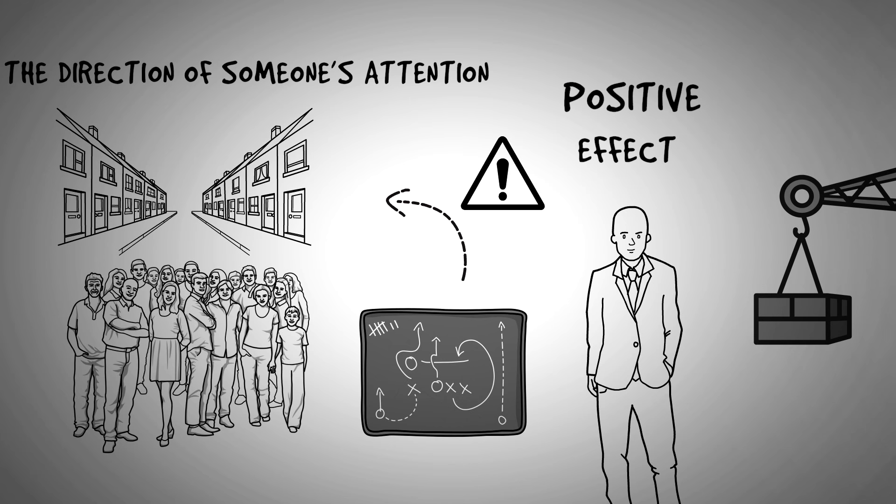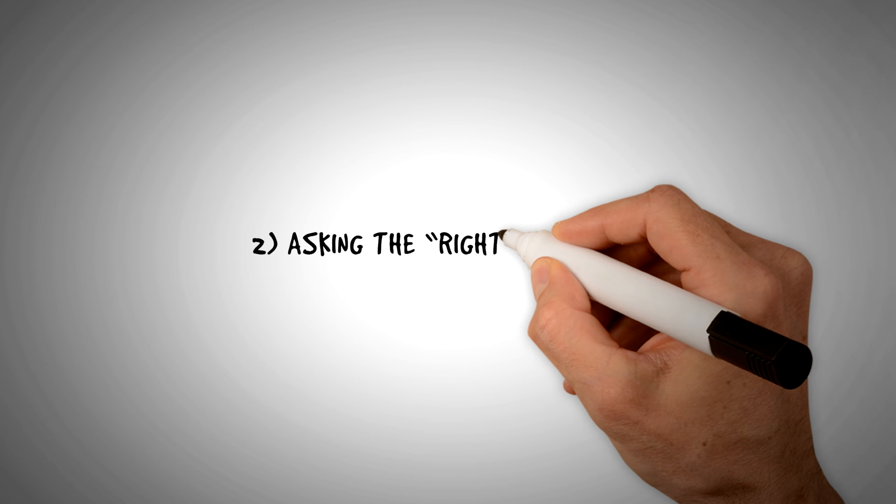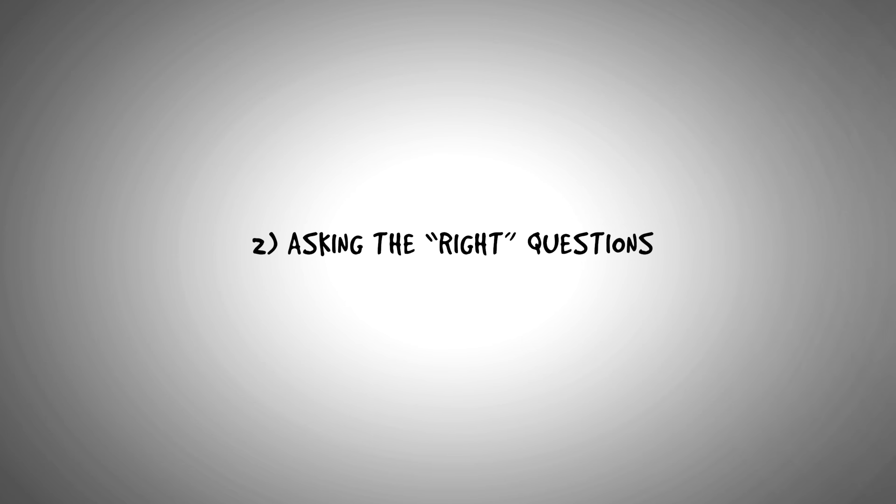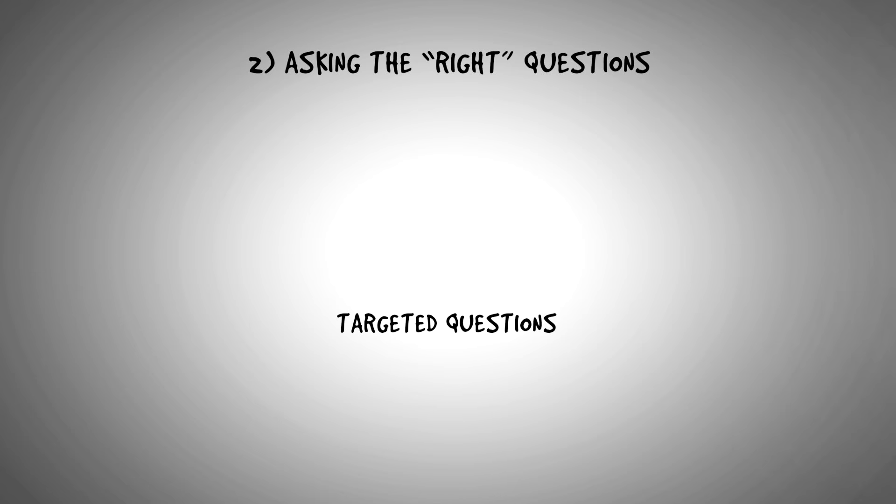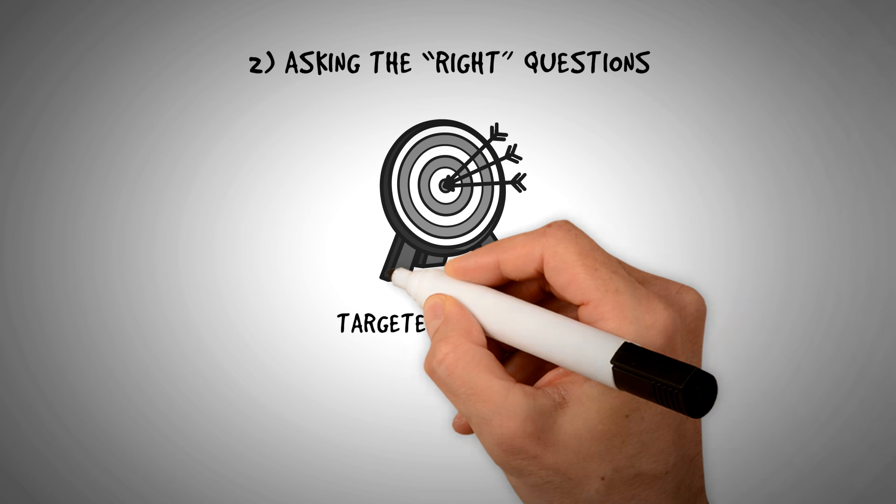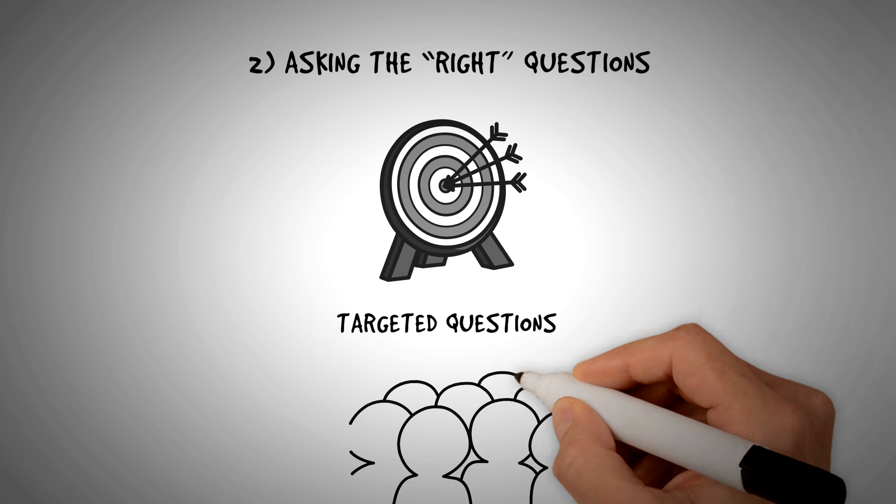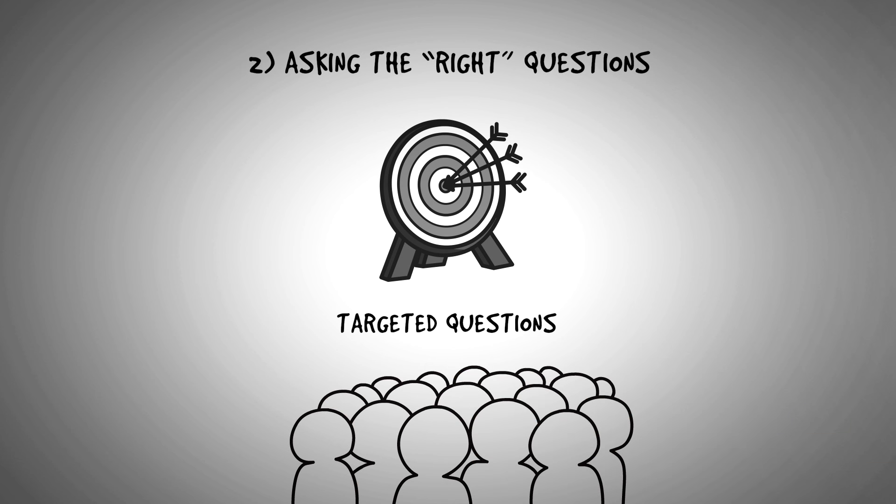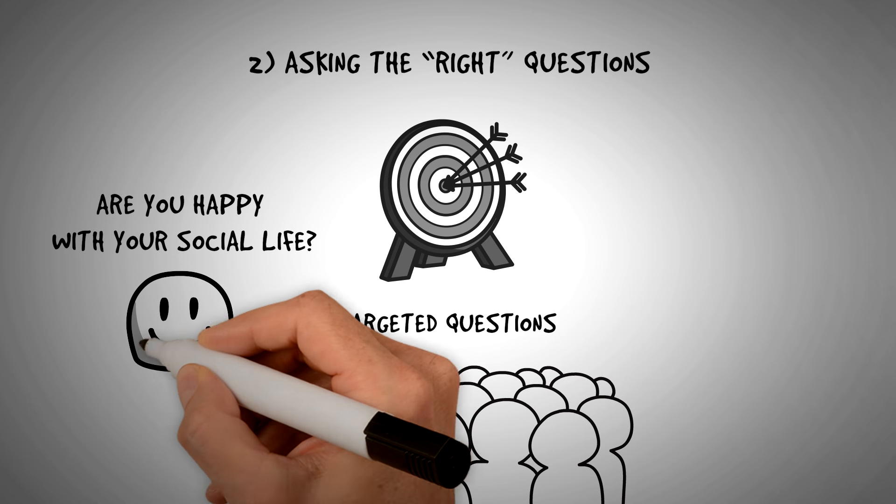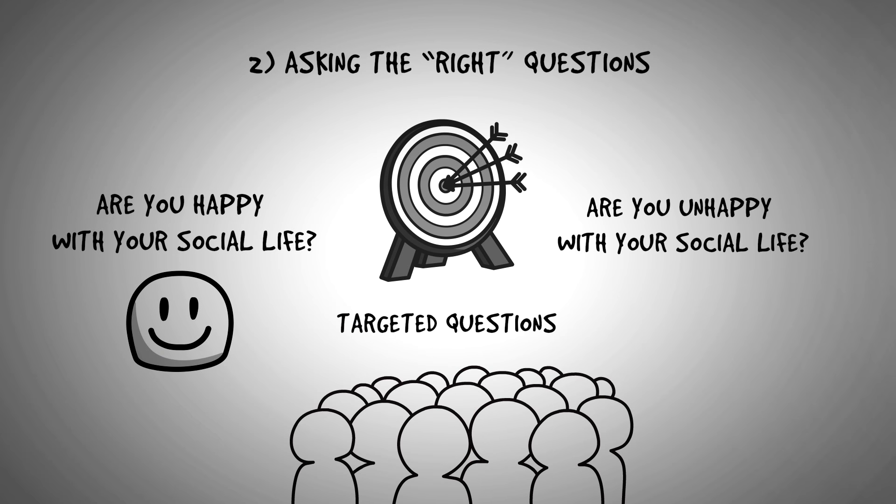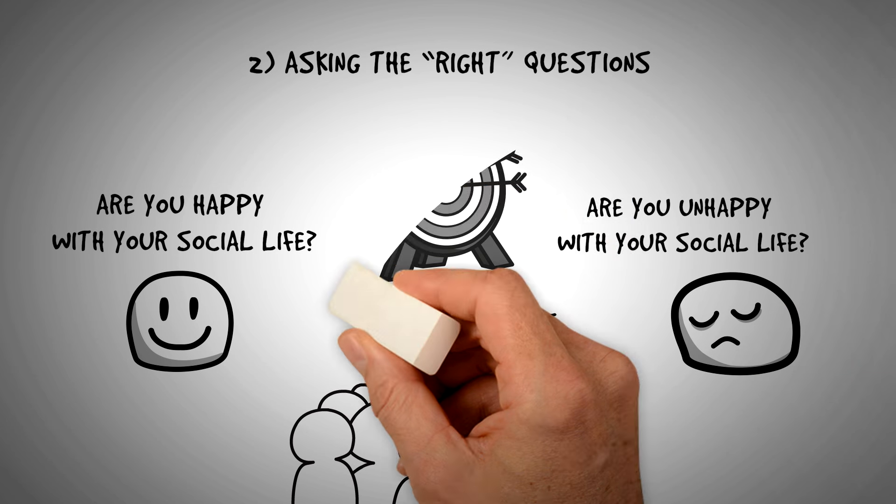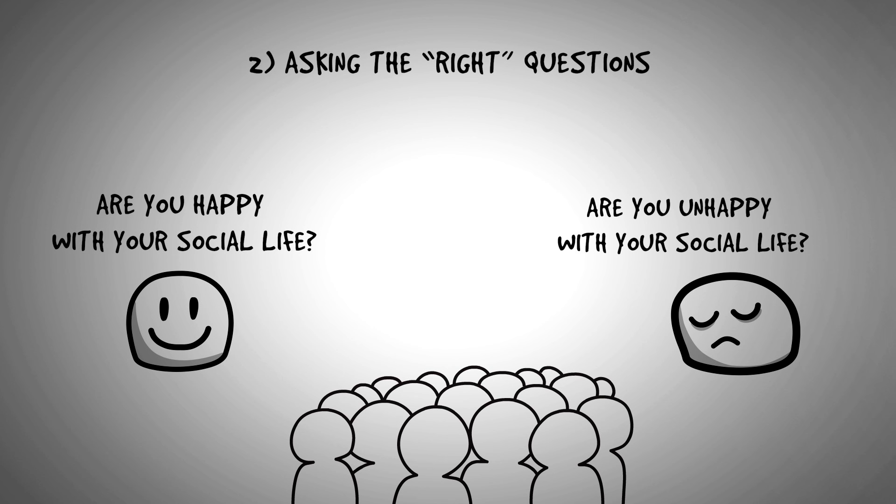Tactic number two is asking the right questions. Using targeted questions is a powerful way of directing someone's attention to where you want it to be. Take this for example. In one Canadian study, people were asked one of two questions. Are you happy with your social life? Or are you unhappy with your social life? And although the questions might seem almost identical to most people, the results are nothing short of surprising.